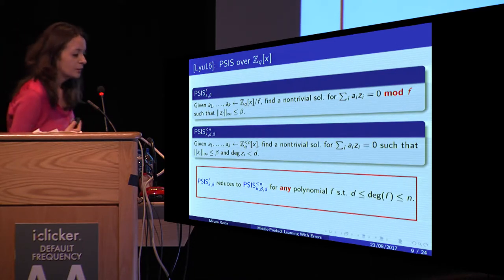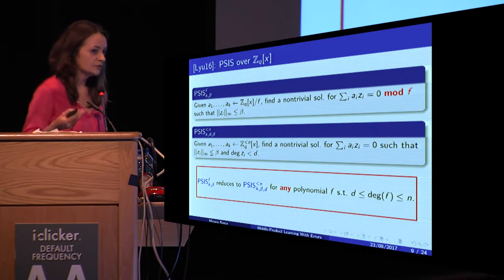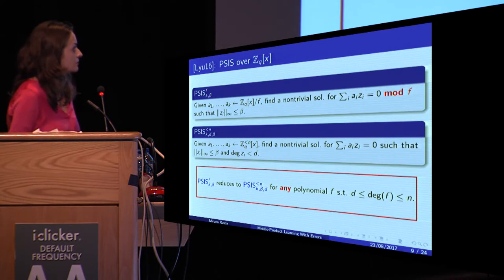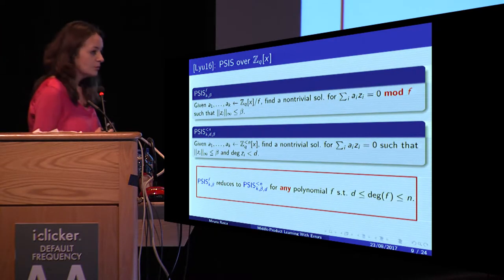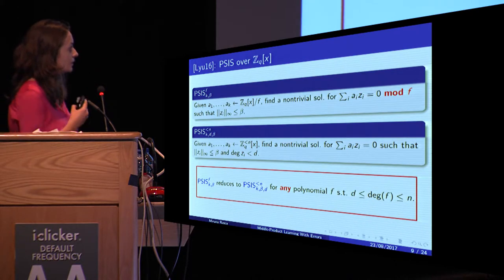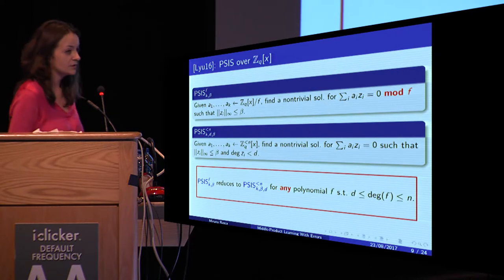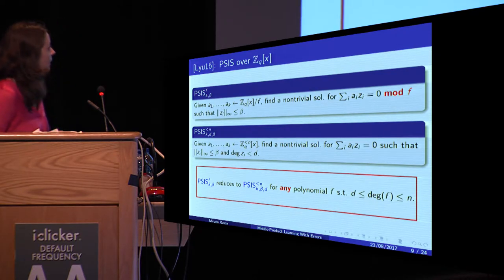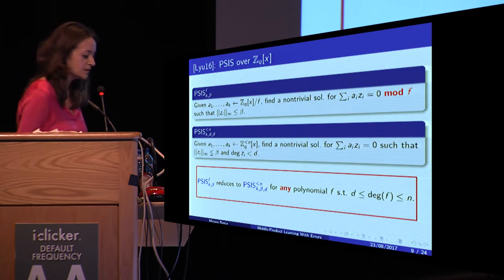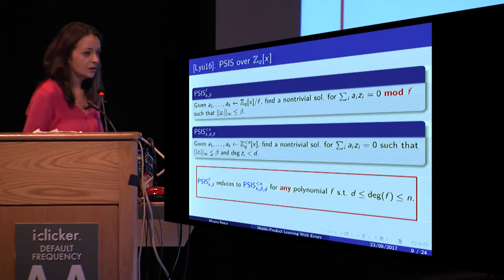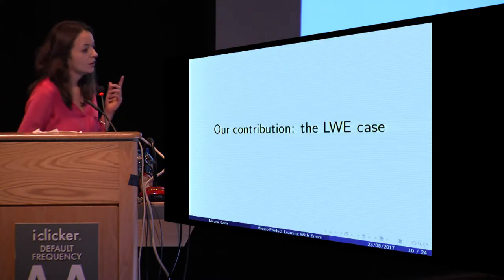To recall: for polynomial SIS, we are given k polynomials in ZQ of X modulo F, and we are asked to find a short non-trivial solution for the equation sum of AI times ZI equals 0 modulo F. For the new polynomial SIS problem, you are also asked to find a short non-trivial solution, but you are not asked to reduce this equation modulo F — that is the only difference. The main result of his paper is that polynomial SIS reduces to the new polynomial SIS for any polynomial of bounded degree.